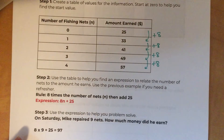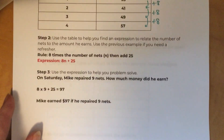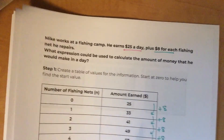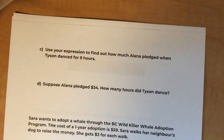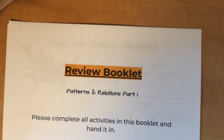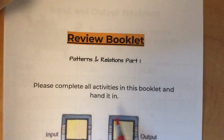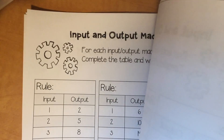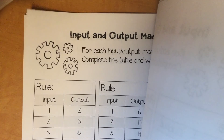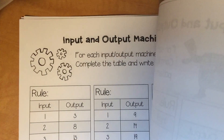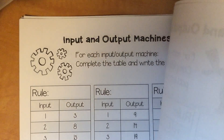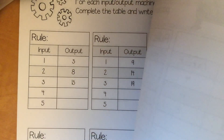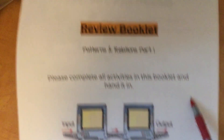There's one more word problem where you find the expression and then use it to solve an equation. Once you've gone through and completed the booklet, you have a review booklet to complete. It has input-output machines where you need to come up with the rule — write those rules as expressions — and complete the missing values. I'll see you next time.